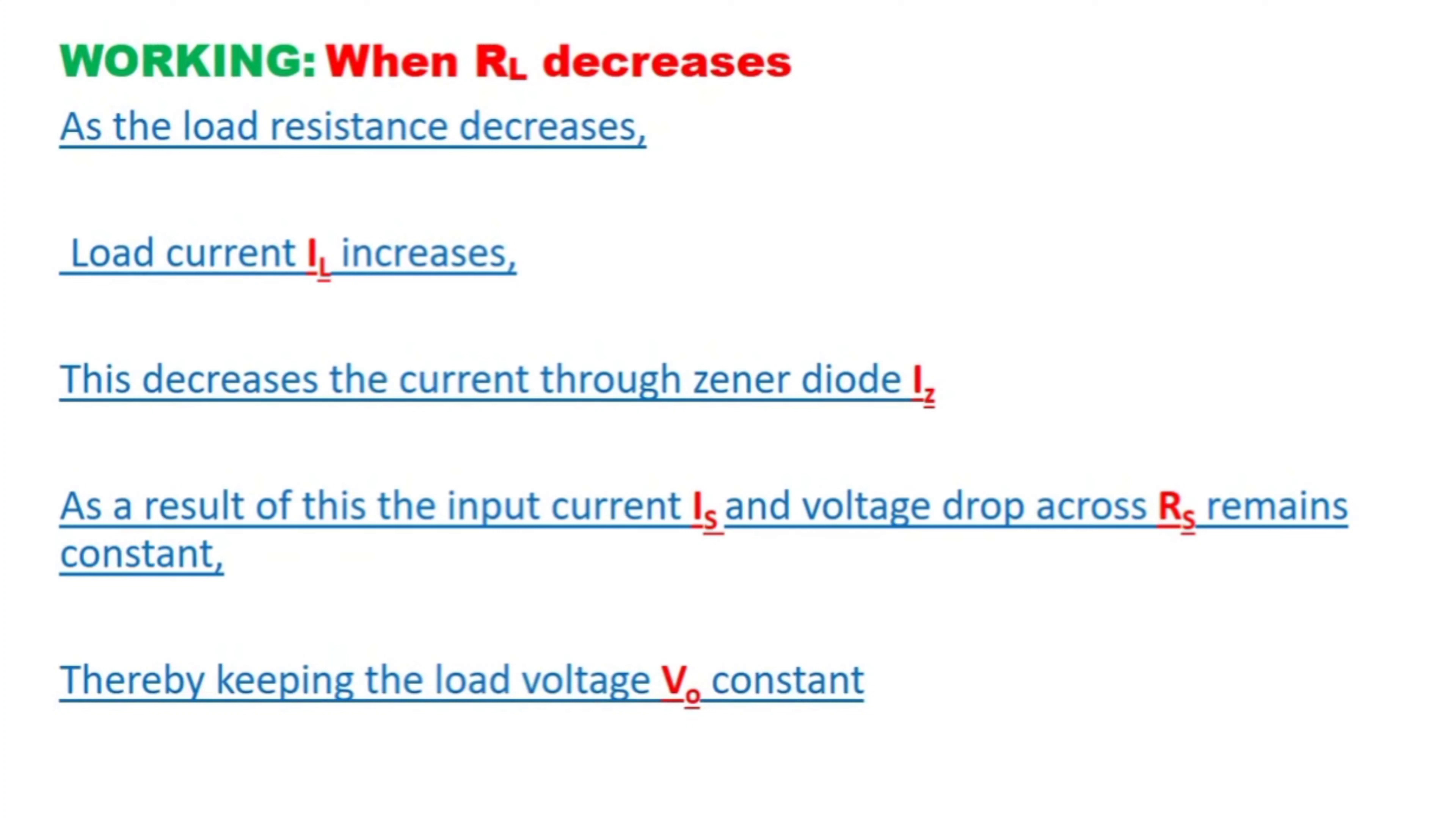The working of Zener diode when load resistance RL decreases. When load resistance RL decreases, what happens? The load current increases. This decreases the current through Zener diode. The current through Zener diode will be decreased. As a result of this, input current IS and voltage drop across RS remains constant. IS and RS remains constant, thereby keeping the load voltage V0 constant. Like that, the Zener diode maintains constant voltage across the load.